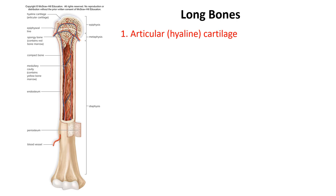Long bones share structural similarities. Where you have an articulating surface — where bone swivels in contact with another bone or structure — it's composed of hyaline cartilage called articular cartilage.